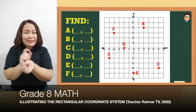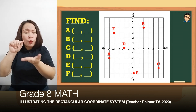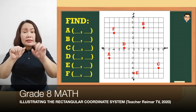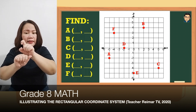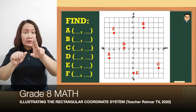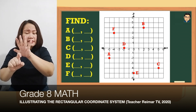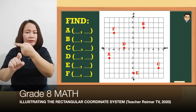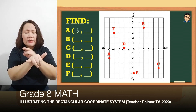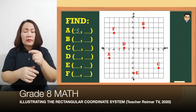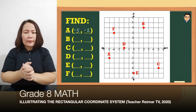Point A ay nasa quadrant 3. Kapag nag-name po tayo, nag-start po tayo sa x and then y. So yung A nasa negative 5 tsaka negative 2 — yung negative 5 po nasa x-axis kaya mauna siya, negative 5, and then nasa y-axis naman yung negative 2. So yung coordinates ng A ay (-5, -2).